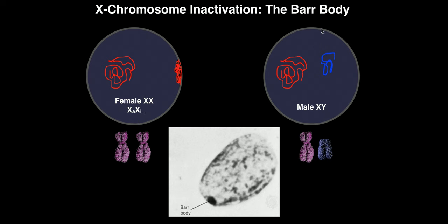In the male with genotype XY, there is no bar body. The general rule is: every somatic cell must have exactly one active X chromosome. In a male, there's only one X chromosome to begin with, so there's nothing to inactivate — that single X is active by default. In a healthy female with two X chromosomes, one is activated and the other is inactivated into a bar body. That is the principle of X chromosome inactivation.